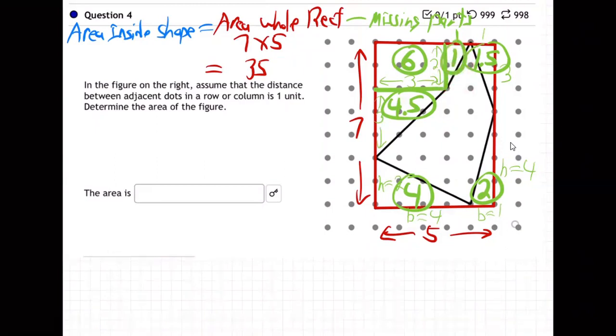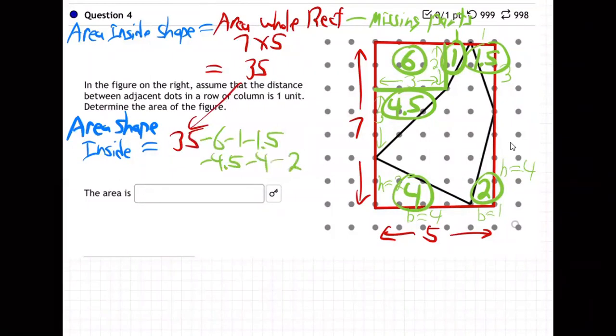Okay, so we got all the missing parts. So the area inside, area of the shape inside is 35 minus all that stuff. Minus six, minus one, minus 1.5, minus 4.5, minus four, minus two. Make sure you didn't miss any. I'm going to count them. One, two, three, four, five, six things. One, two, three, four, five, six things. Looks good.